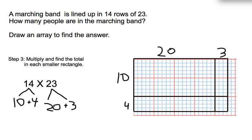Step three, we're going to multiply and find the total in each smaller rectangle. So in this rectangle, we really have 10 rows of 20. So multiply 10 times 20.